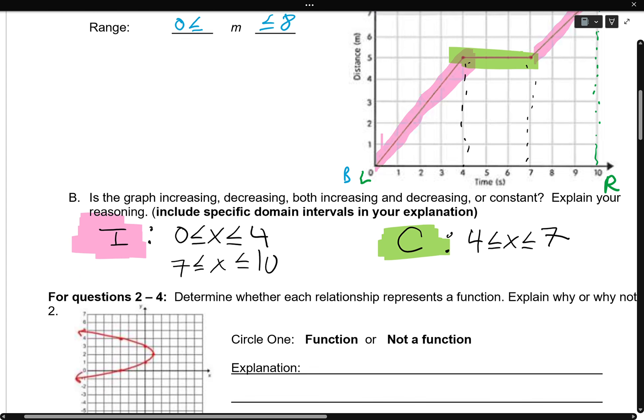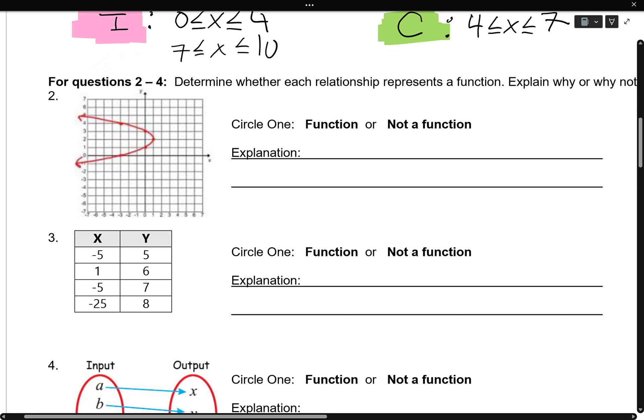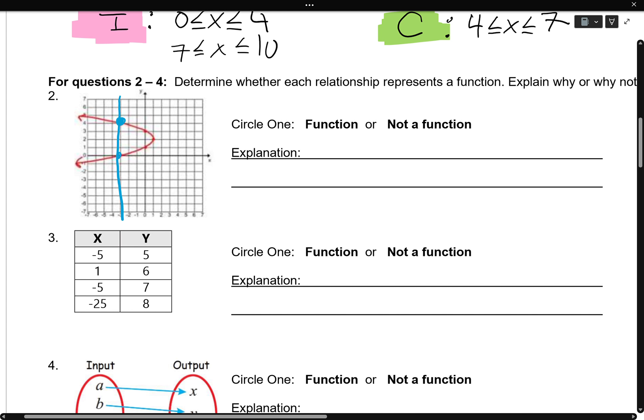For questions 2 through 4, let's determine whether each relationship represents a function, and we'll explain why or why not. For number 2, when it's a graph, what I do is draw a line through it and see how many times do I cross this vertical line. It looks like my U-shaped graph crosses it twice. This means it's not a function. Fails the vertical line test. Crosses twice.